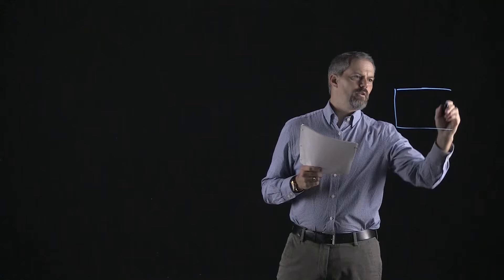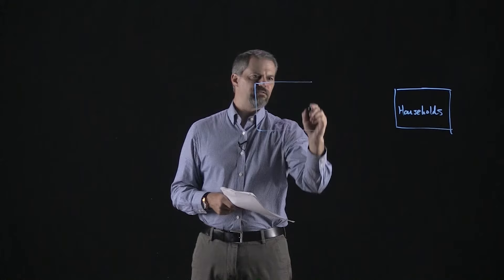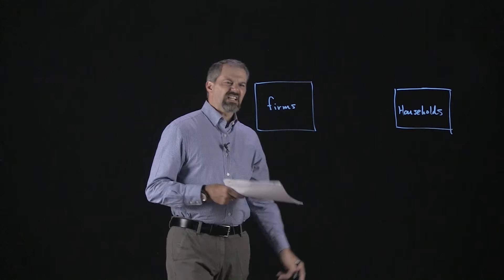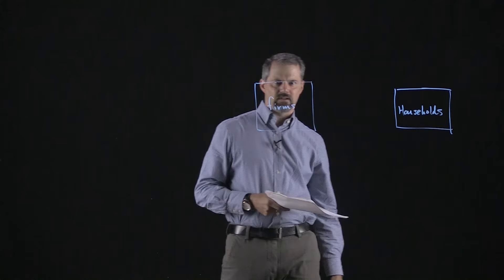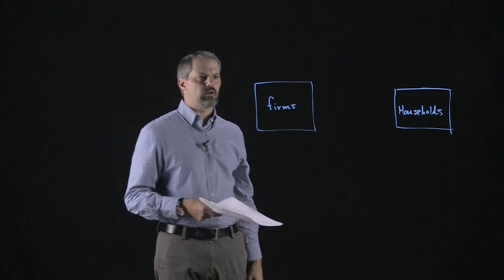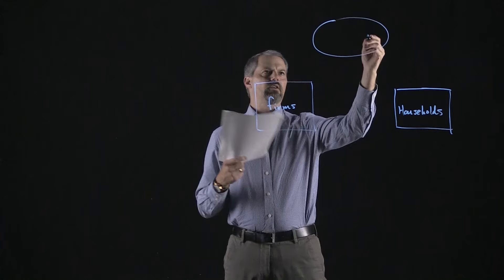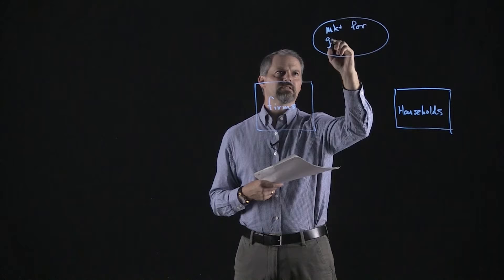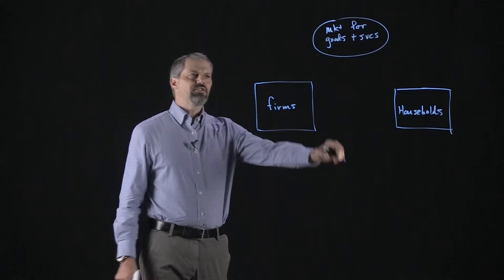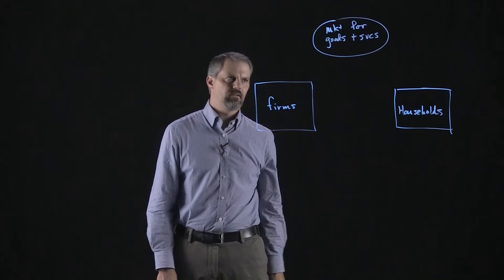That model is what we call the circular flow diagram. In the circular flow diagram, we're going to represent households over here with a box, and over here we're going to represent businesses, or what we call firms. Up here we have a circle representing the market for goods and services — this is where you go if you want to buy a pizza, a new pair of shoes, or a car. The firms are the ones making those goods and services.